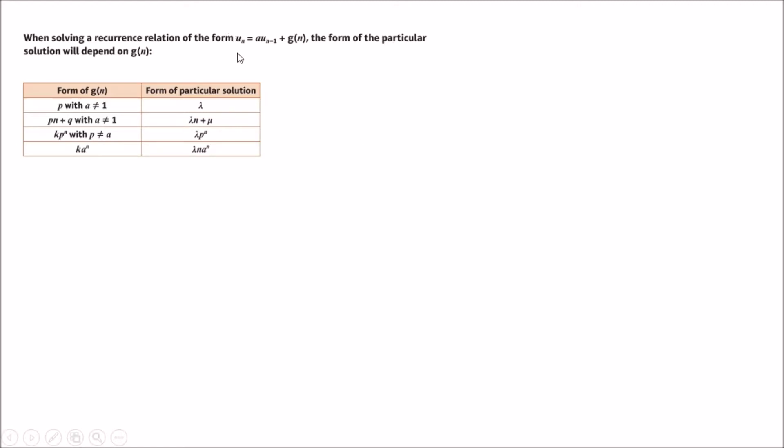When solving a linear first-order recurrence relation like this one here, the bit that seems to be scaring people is finding the particular solution and which form to plug in. This is the table that's given in the textbook that suggests which forms to plug in. I think this table looks a little bit scary and we can't really learn it just from this table.